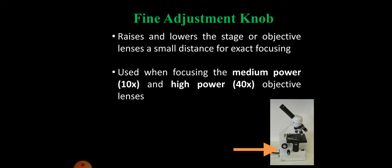Fine adjustment knob raises and lowers the stage or objective lenses a small distance for exact focusing. Used when focusing the medium power (10x) and high power (40x) objective lenses. I hope this simple introduction about microscope was helpful. Thank you, we'll see in the next video.